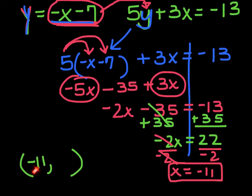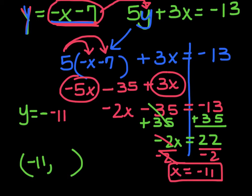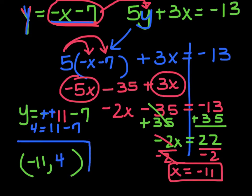Now that I know the x value, I can go back to my original equation and plug it in. It says y equals negative x minus 7, so I substitute x equals negative 11: the opposite of negative 11 is positive 11, and 11 minus 7 is 4. So my y value is 4. The solution to this system of equations, solved using substitution, is x equals negative 11, y equals 4.